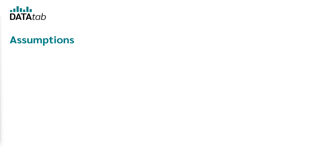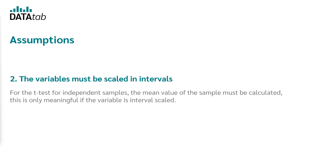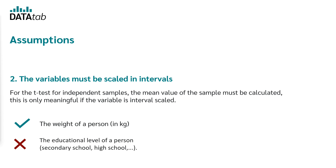The second assumption is that the variables must be interval scaled. In order to carry out the t-test for independent samples, the mean value of the sample must be calculated, which only makes sense if the variable is interval scaled. An example would be the weight of a person in kilograms. But the educational level of a person — secondary school, high school, and so on — is not interval scaled.